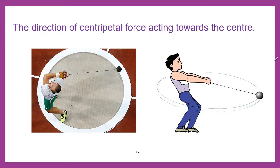The centripetal force does not exist by itself — it is provided by an external source. In these diagrams, two sportsmen are providing the centripetal force with their hands continuously, pulling the balls toward the center. In case of a satellite, the Earth is providing centripetal force to keep it revolving in a fixed orbit. In case of the solar system, the sun is providing the centripetal force to keep the planets revolving in their fixed orbits.